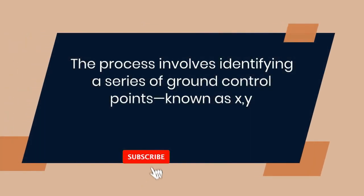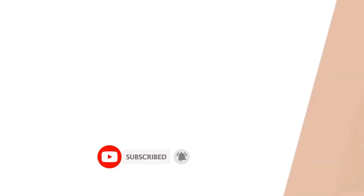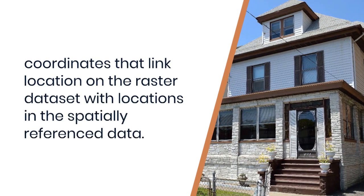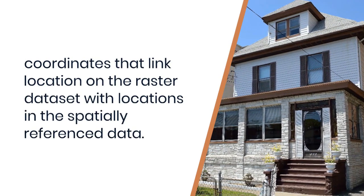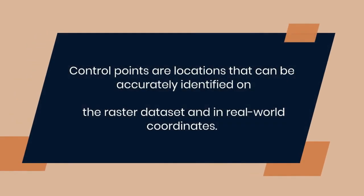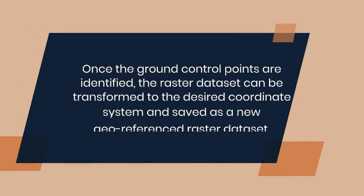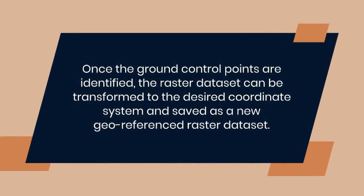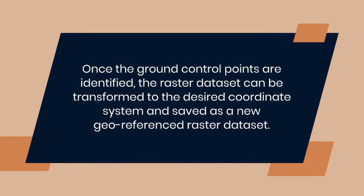The process involves identifying a series of ground control points — known x, y coordinates — that link locations on the raster dataset with locations in the spatially referenced data. Control points are locations that can be accurately identified on the raster dataset and in real-world coordinates. Once the ground control points are identified, the raster dataset can be transformed to the desired coordinate system and saved as a new georeferenced raster dataset.